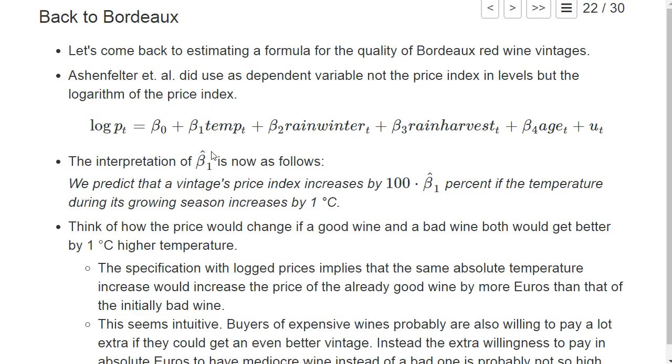And it is very common in a linear regression that you take a logarithm of some variable, either the dependent or some independent variables, or both. So here, Aschenfelter and their formula, they took the logarithm of the price index. So the interpretation now of the estimated coefficient in front of the temperature would be that we predict that the vintage's price index increases by 100 times our estimated coefficient percent if the temperature increases by one degree Celsius.